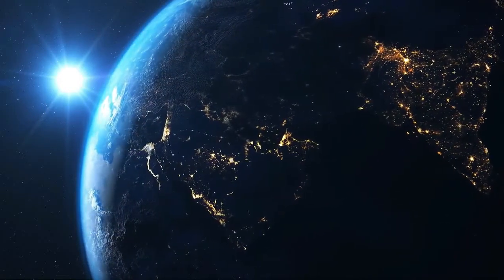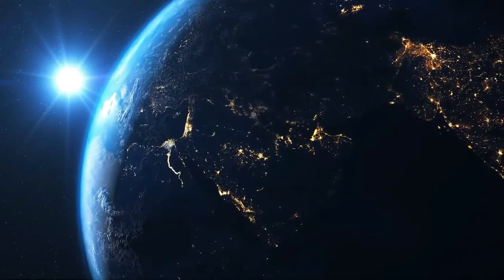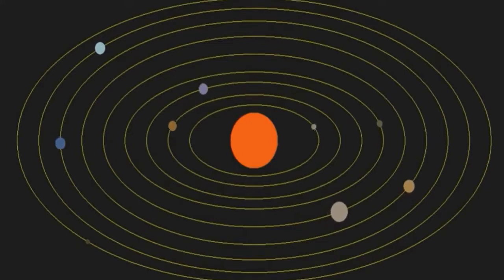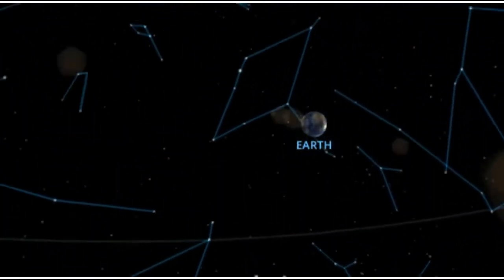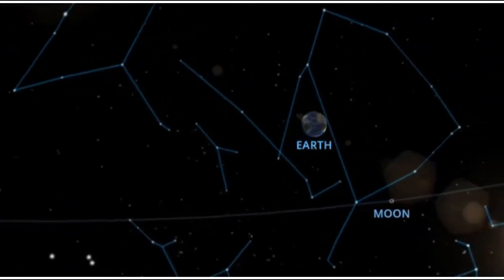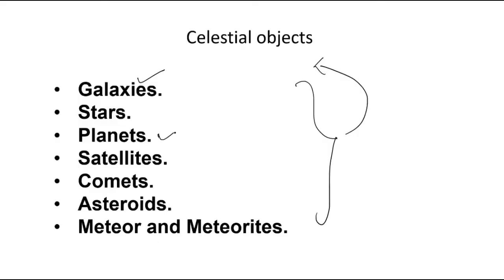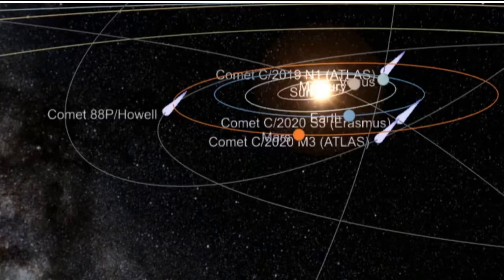Planets are those heavenly bodies, those celestial objects, they move around the stars. Now we know about eight planets, they all move around sun and earth is one among them. Then we have a satellite and satellites are those objects, they can be called as moons and they are moving around the planets.